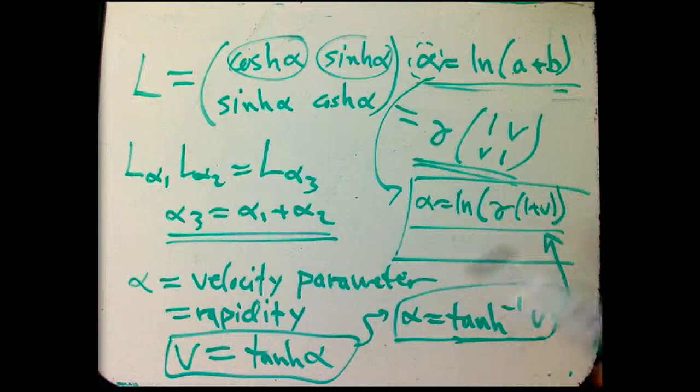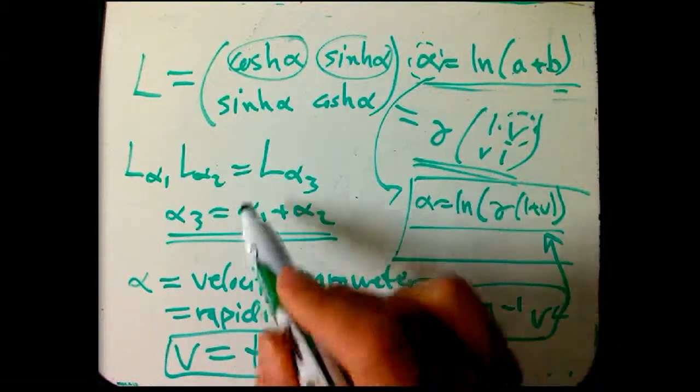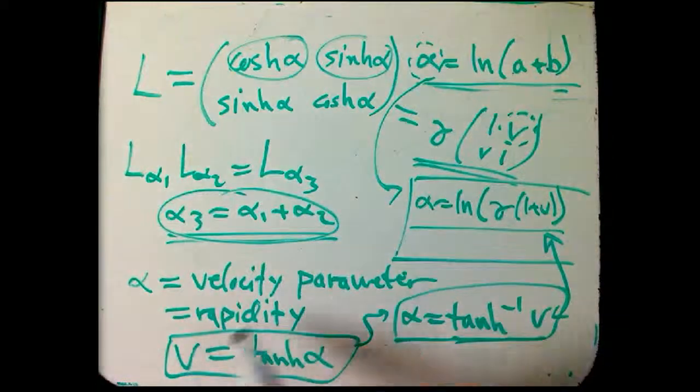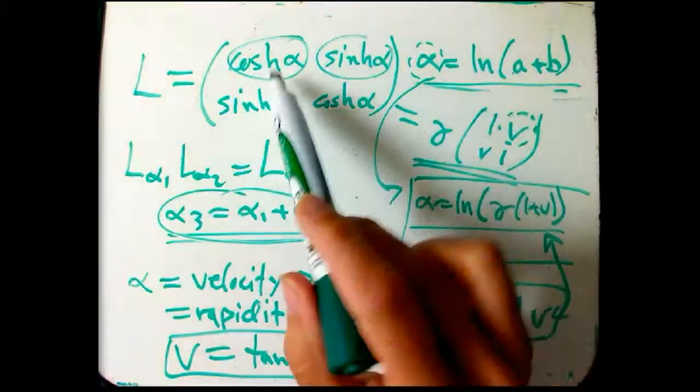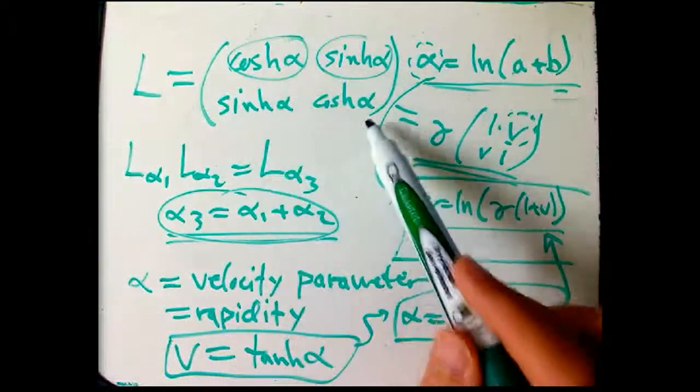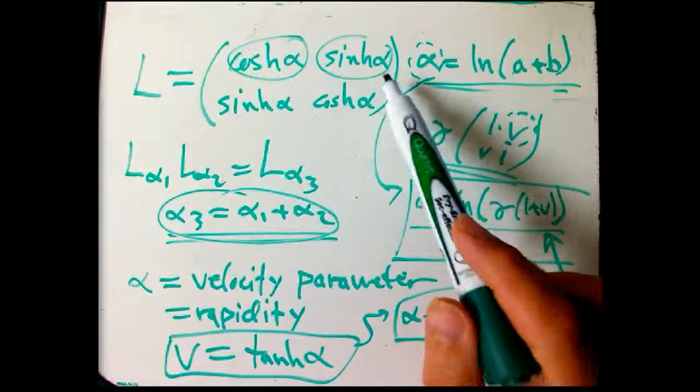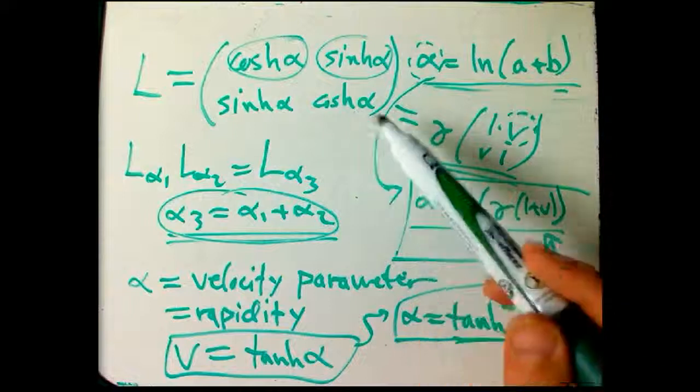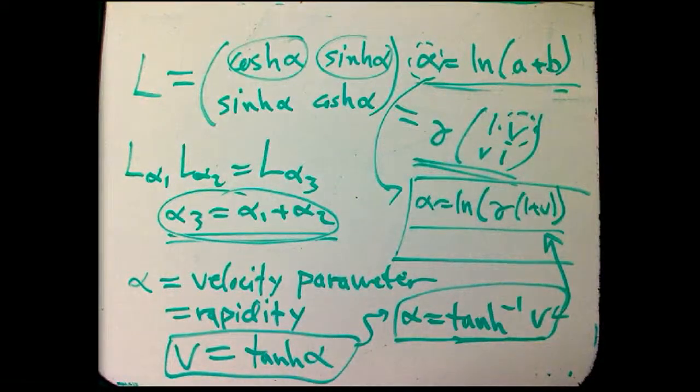So what it's really saying is that for a lot of purposes, V just isn't the right thing to describe. This addition of velocities rule is so pretty and so nice, it's very tempting to say, as much as possible, I'm going to try and describe relative motion in terms of alpha instead of V. That's like saying I want to describe rotations in terms of theta, the angle, instead of the slope. There's some real advantage to that.